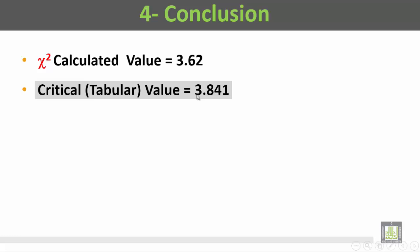This is the critical or the tabular value which is equal to 3.841. So we have the calculated value equals to 3.62 while the critical or tabular value is equal to 3.841. This value has been calculated and this value is the tabular value taken from the table.